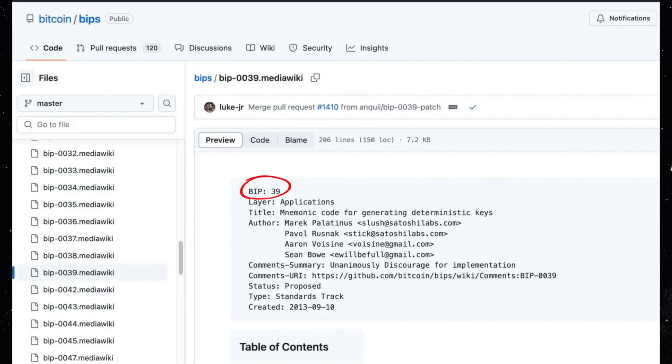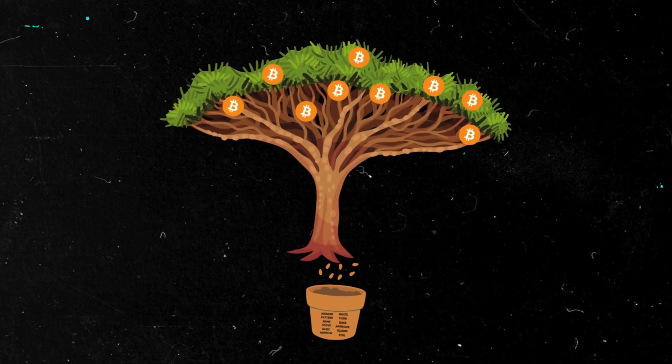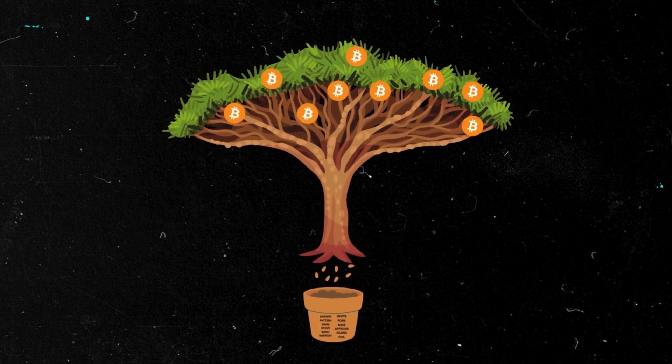A seed is a code used to recover a Bitcoin balance in any wallet that is compatible with Bitcoin's BIP39 standard. The word 'seed' comes from the fact that you can use this code as a seed to grow an entire tree of Bitcoin addresses. A single seed can generate several addresses and keys that will protect your Bitcoin. If you insert your seed into any BIP39 compatible software or hardware wallet, you will always be able to access your balance, even if the original wallet is damaged. You just have to download a new wallet or buy a new device and recover your balance using your seed or seed phrase.